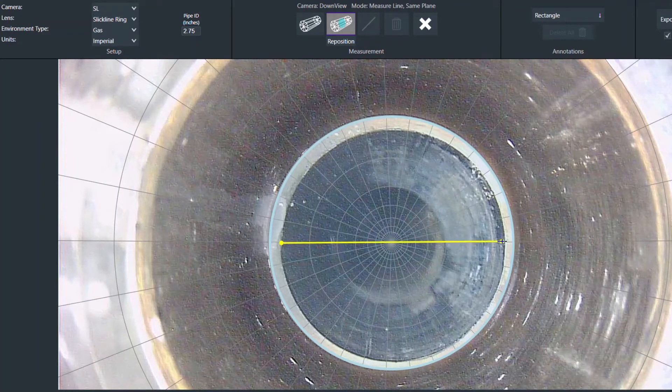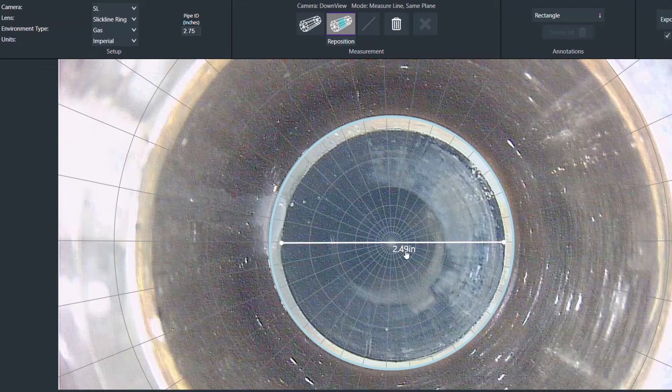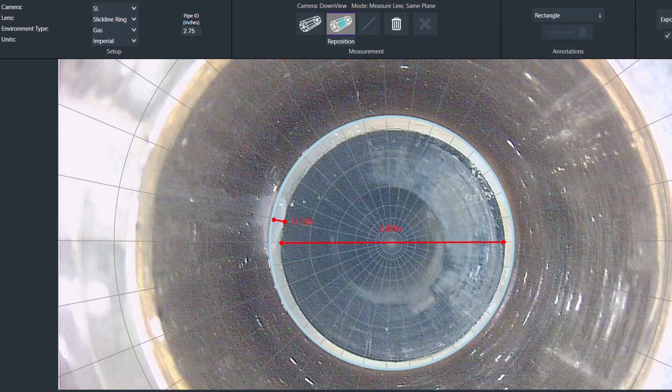EV's integrated visualization and dimensioning software enabled accurate in-situ measurements of the inner diameter of the pup joint and the step change in diameter encountered by the drift tool strings.